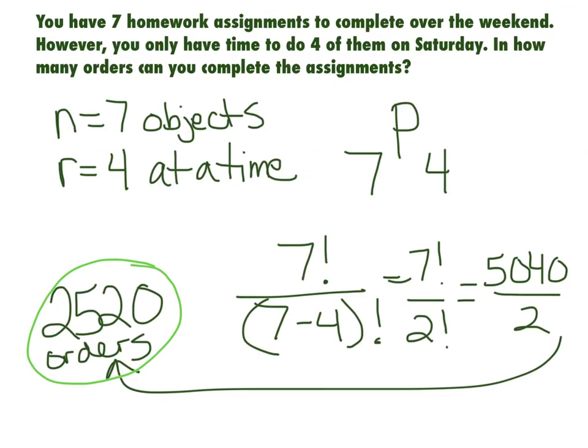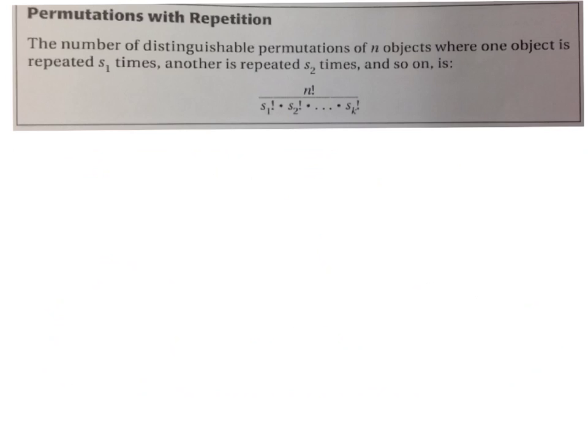And now we have one last thing. It's going to be a little bit harder, but it's the last thing of this video. Permutations with repetition. That means that the number of distinguishable permutations of N objects, where one object is repeated S1 times and another is repeated S2 times and so on, is N factorial over S1 factorial times S2 factorial and so on.